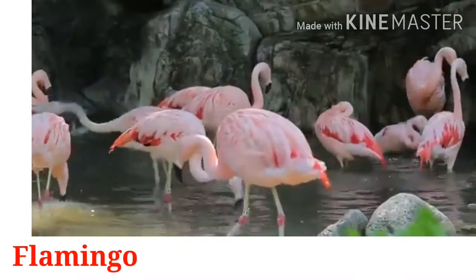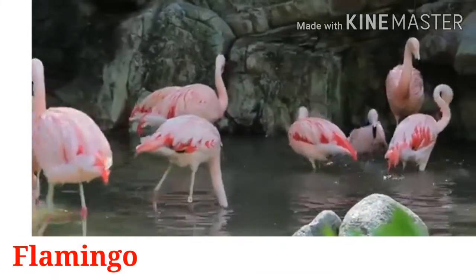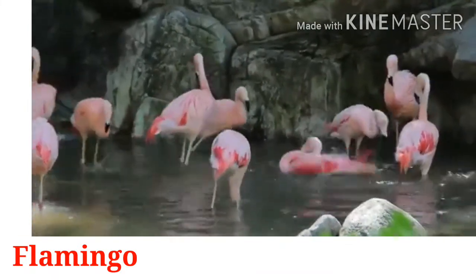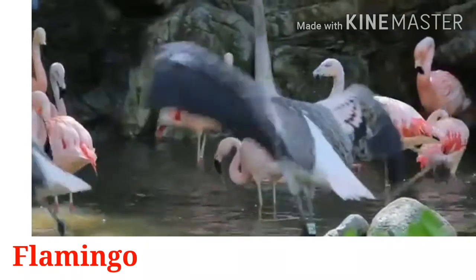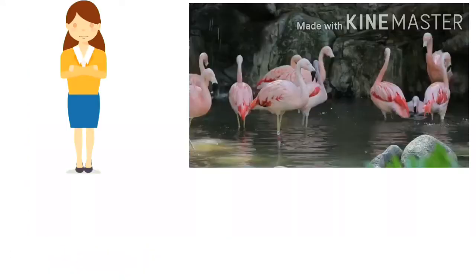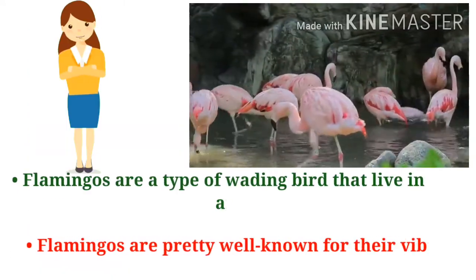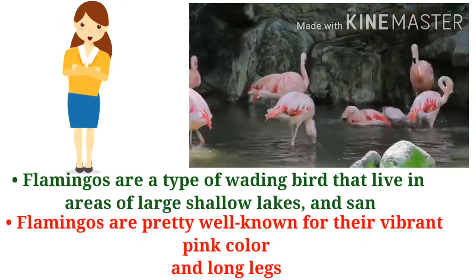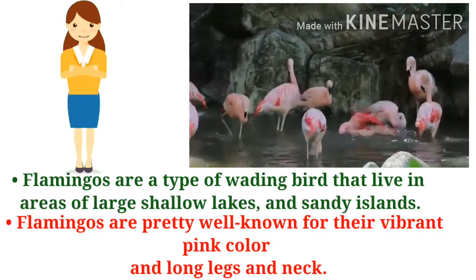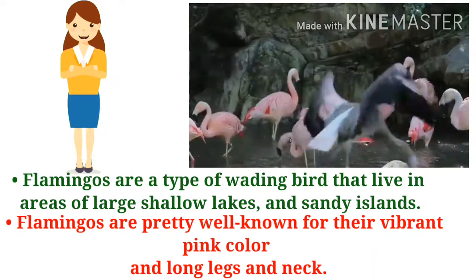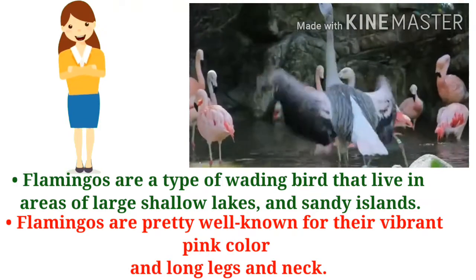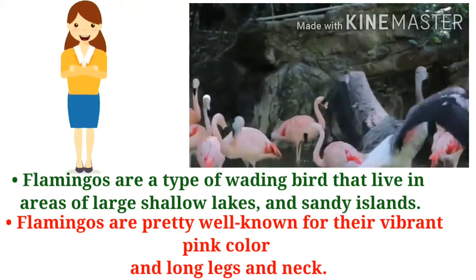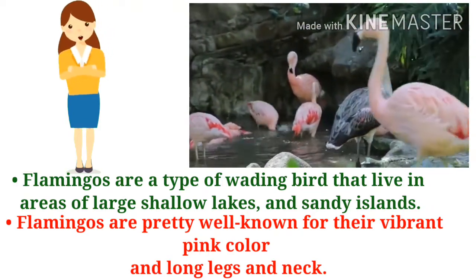Who is this? This is a flamingo. F-L-A-M-I-N-G-O. Let's introduce the flamingo. Flamingos are a type of wading bird that live in areas of large shallow lakes and sandy islands. Flamingos are well known for their vibrant pink color and long legs and neck.